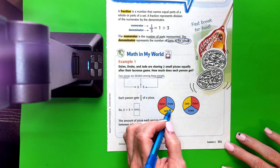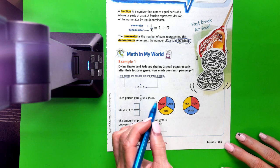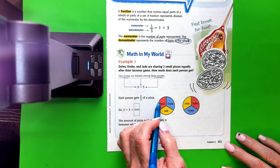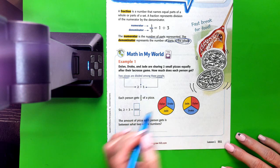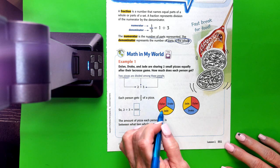You can see, and they're going to ask you in this lesson to draw lots of models, so you can see they've drawn two pizzas and divided them into thirds. And then they color-coded them.